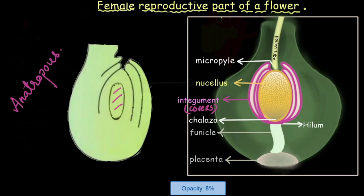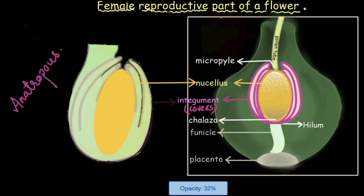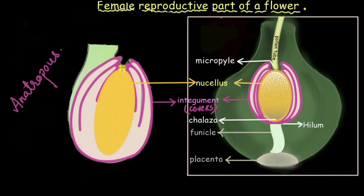So let us give it the same color. This is the nucellus and as you can see the nucellus has two coverings here. It will also have two coverings. So these two things that you see are the integuments and the portion which is left uncovered by the integument is called the micropyle.